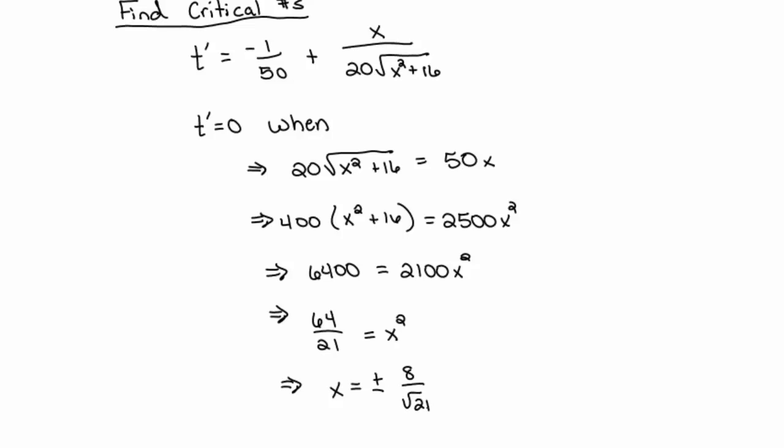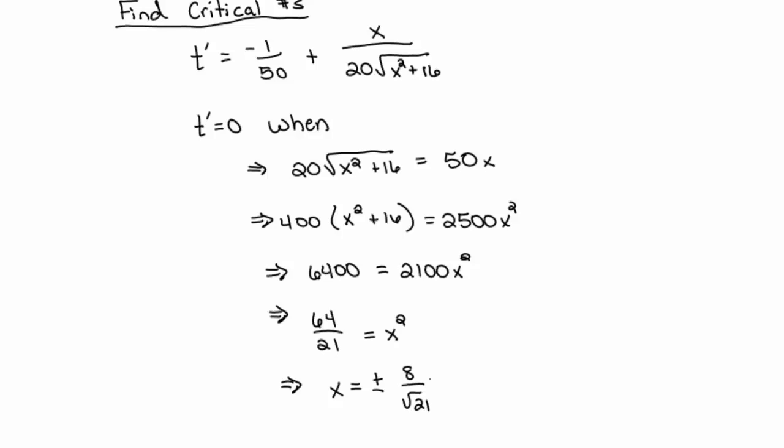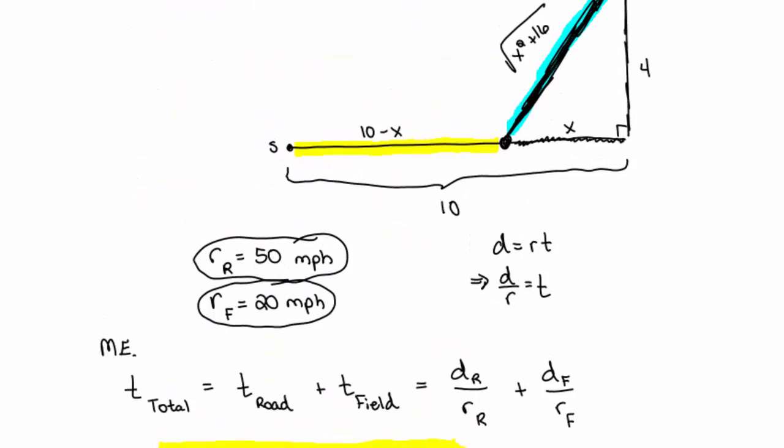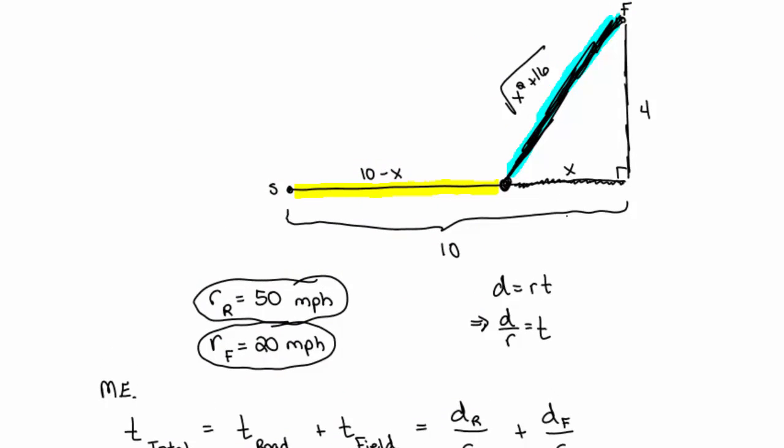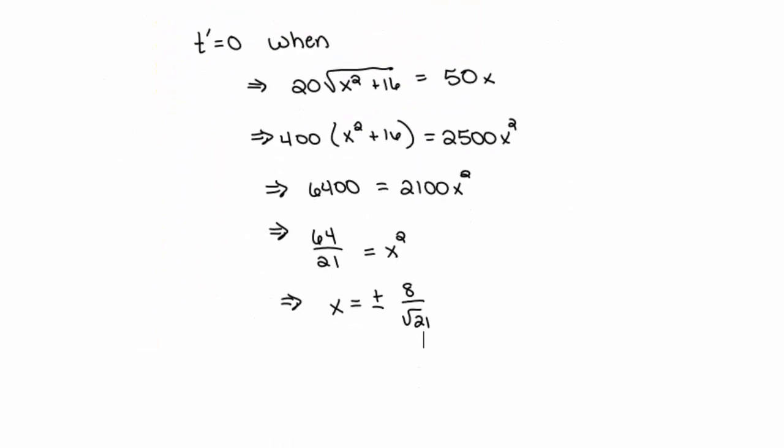x is a distance along the roadway, the remaining distance. You cannot have a negative remaining distance, so I'm going to throw out the negative for reality purposes. x, one critical number, the only critical number I have is x equals 8 over root 21.